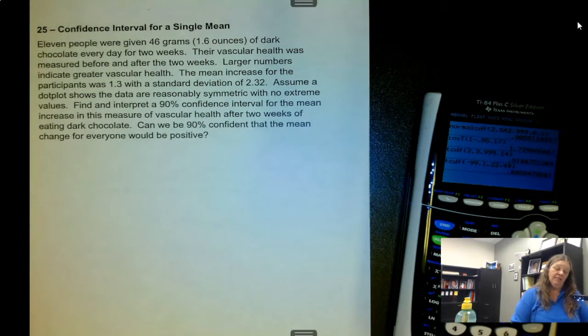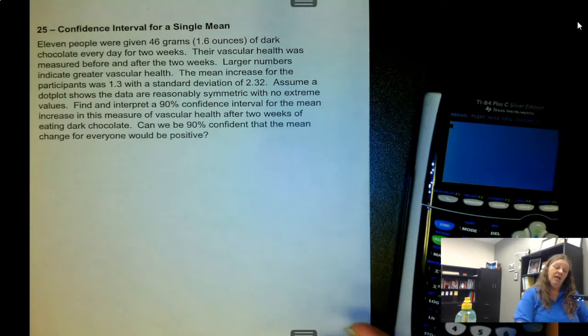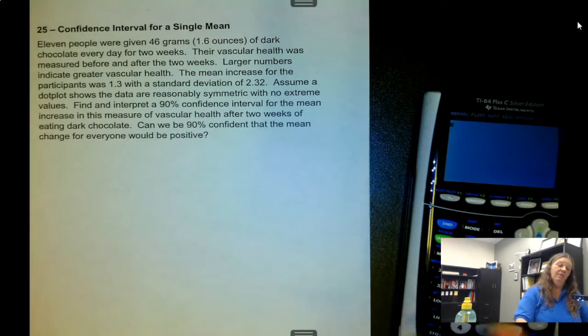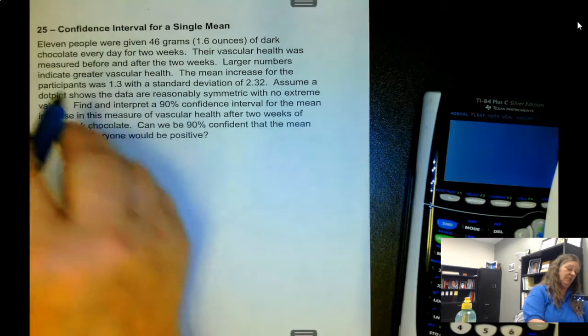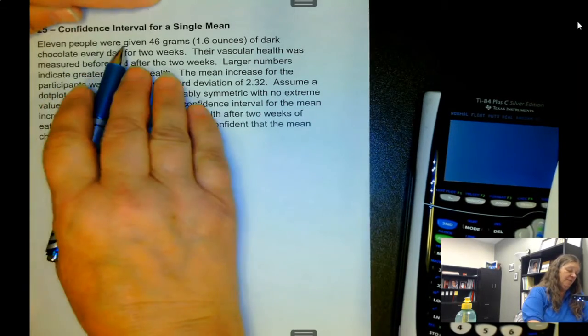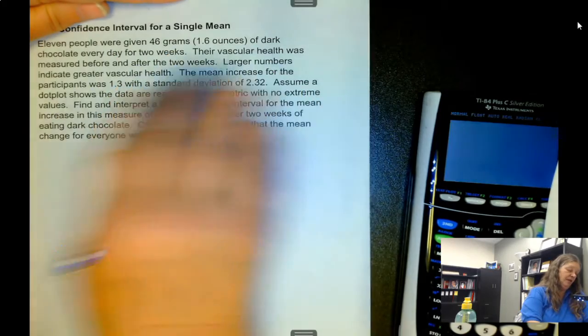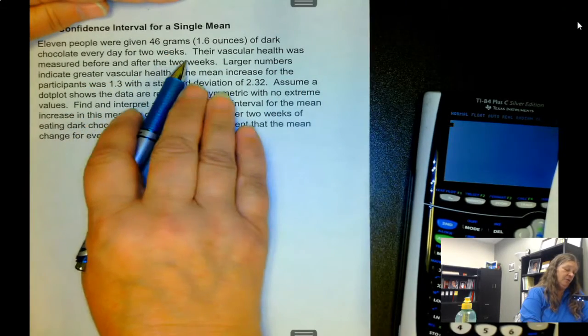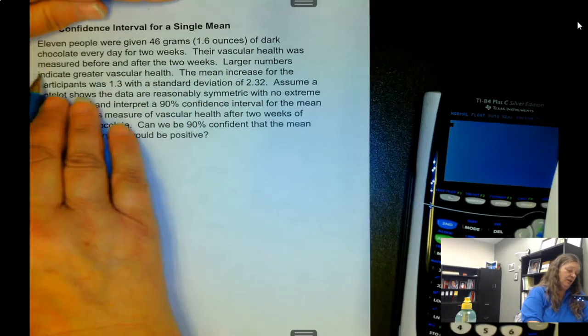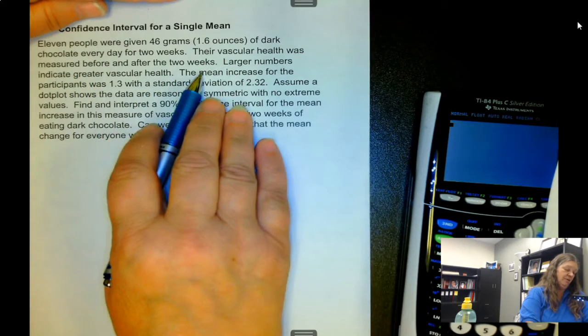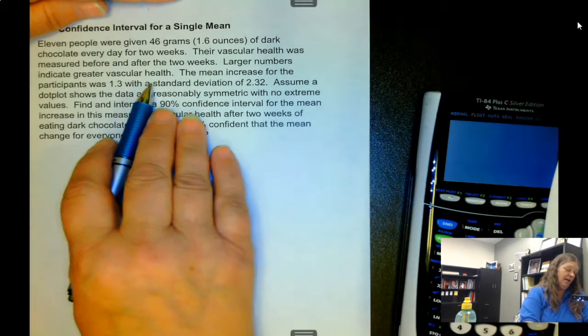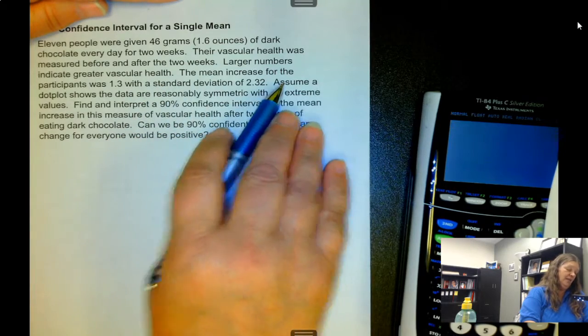Okay, now we know how to get the standard error and we know how to use T, we can find confidence interval for a single mean. So 11 people were given 46 grams of dark chocolate every day for two weeks. Their vascular health was measured before and after the two weeks. Larger numbers indicate greater vascular health.